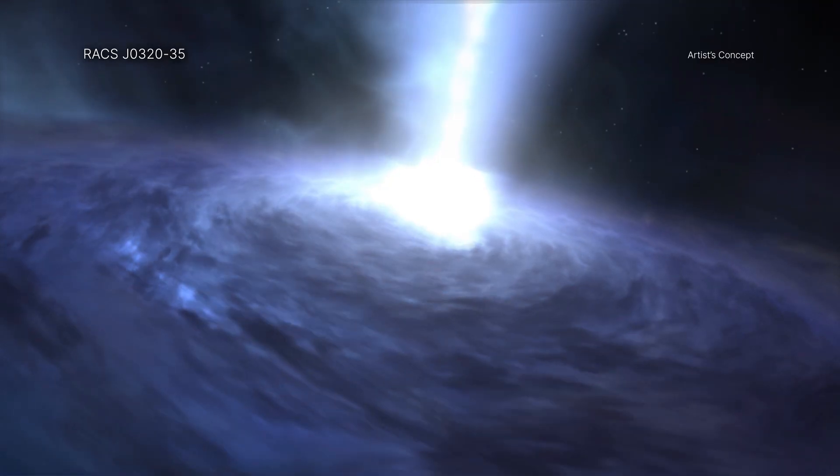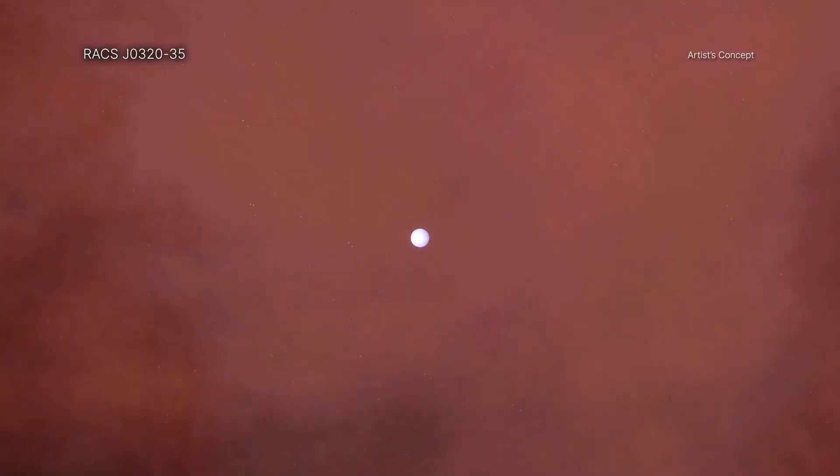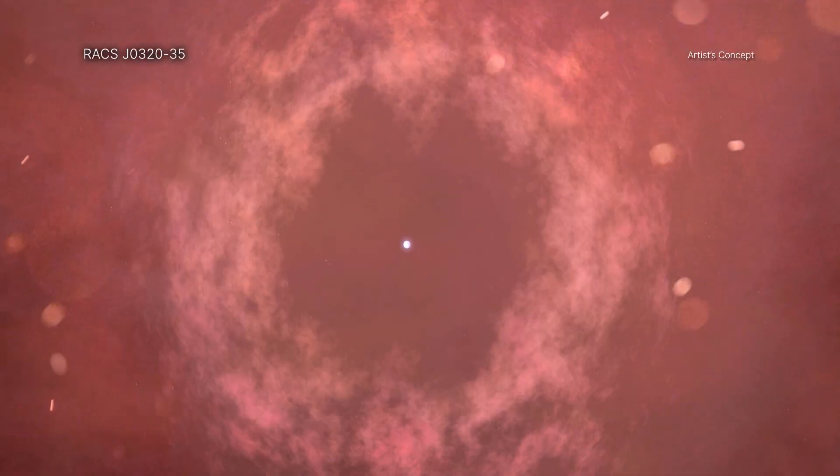If RACS J0320-35 is indeed growing at a high rate, estimated at 2.4 times the Eddington limit, and has done so for a sustained amount of time, its black hole could have started out in a more conventional way with a mass less than 100 suns, caused by the implosion of a massive star.